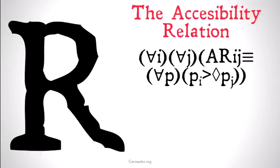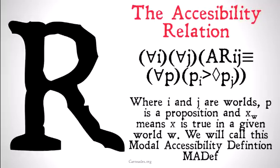The accessibility relation is: for all I and all J, where I and J are possible worlds, J is accessible to I if and only if for all propositions P, if P is true in I, that implies that it's possible that P in J. Where I and J are worlds, P is a proposition, and X,W means X is true in a given world W. We're going to call this definition the modal accessibility definition.